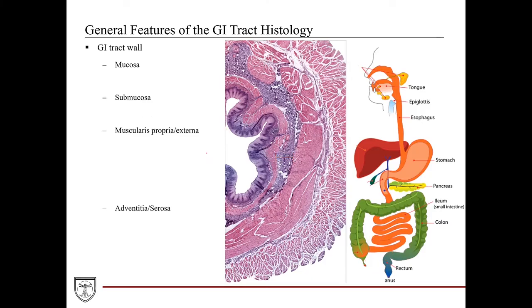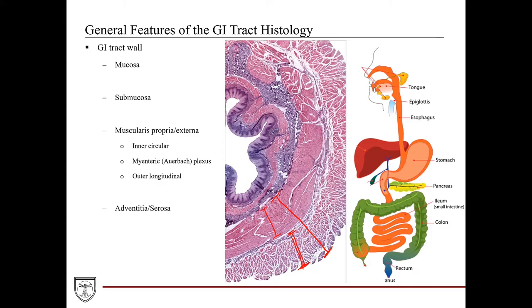The third layer out is the muscularis propria or externa. As the name suggests, this is a more substantial layer comprised of muscle tissues. Throughout the majority of the GI tract, the muscularis propria is comprised of two layers: the inner layer is arranged in circular conformation, called the inner circular layer, and the outer layer is arranged in longitudinal orientation to the long axis, called the outer longitudinal layer. Squished in between the two layers, we typically have a neural plexus called the myenteric or Auerbach's plexus — autonomic neural structures that allow the peristaltic movement of the GI tract wall.